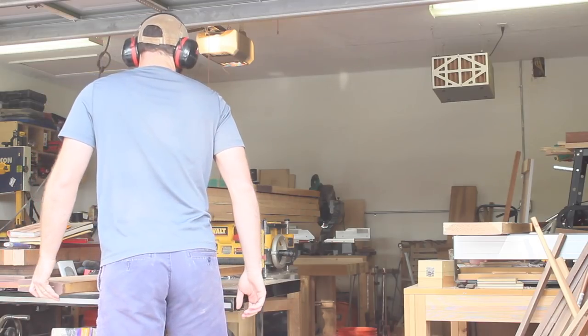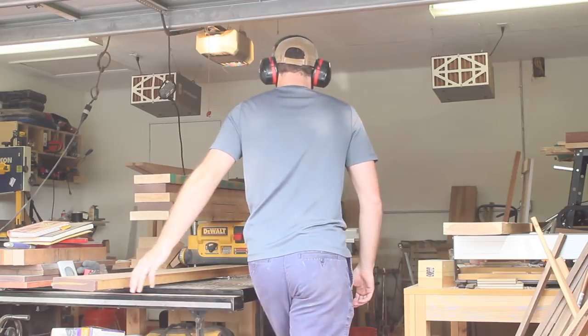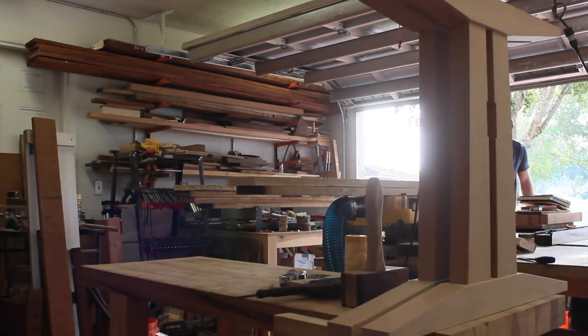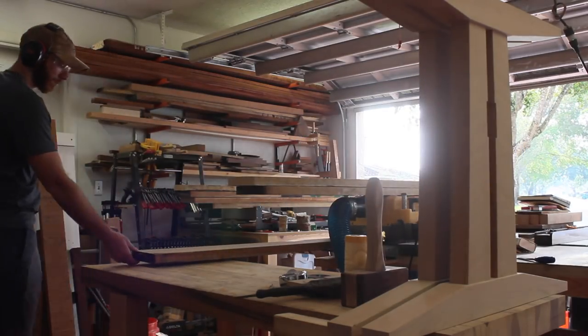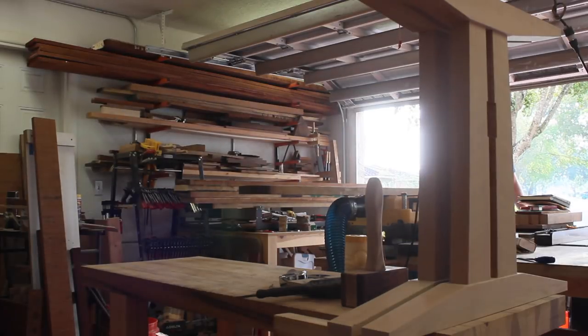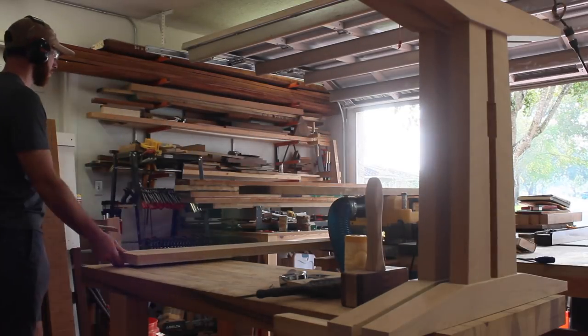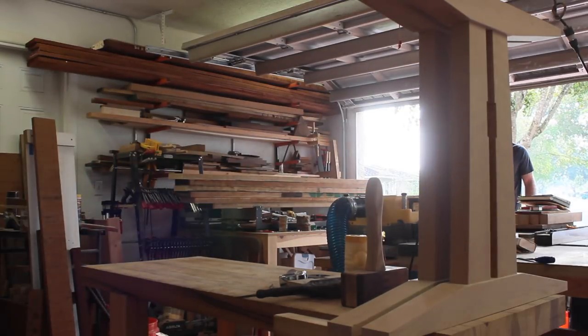With the 2 trestles done, I can get started building the top. The plan here is to have a 36 inch wide table top, comprised of 6 six inch wide boards. I'm going to start off by skip planing these boards and then getting them jointed on the table saw.